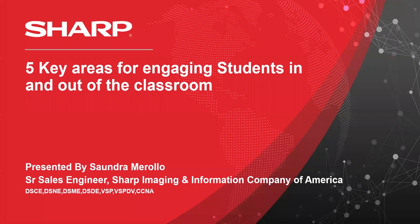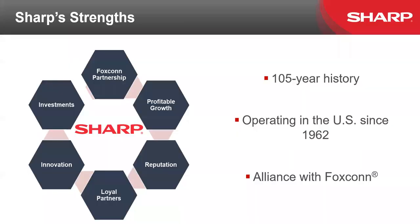Thank you, Chris, and hello to everyone. I want to back up for a second and add that SHARP has a 105-year history and has been operating in the U.S. since 1962. We're proud to be in alliance with Foxconn, which is the fifth largest manufacturing company worldwide. We pride ourselves on being connected with our customers and partners, and on listening to the voice of the customer when it comes to developing our technology.